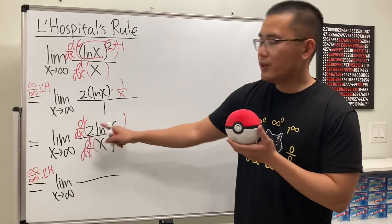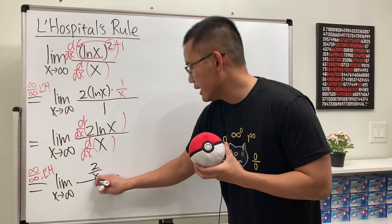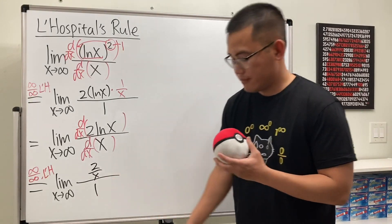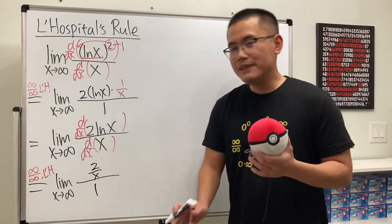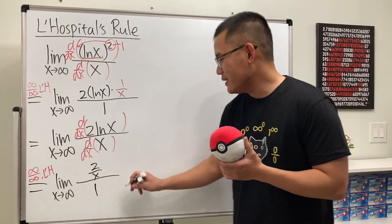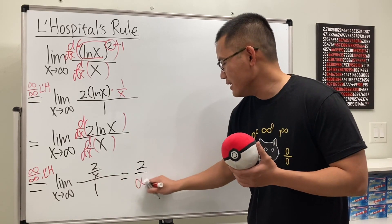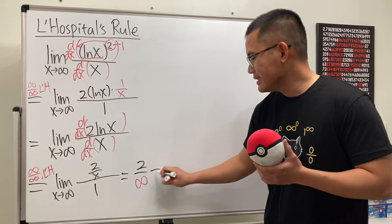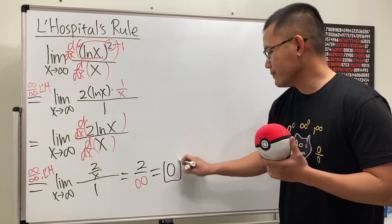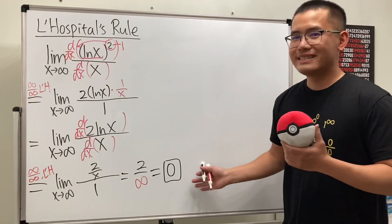The derivative of 2 ln x is 2 over x, and the derivative of x is just 1. Finally, we plug in infinity, giving us 2 over infinity, and the answer is equal to 0.